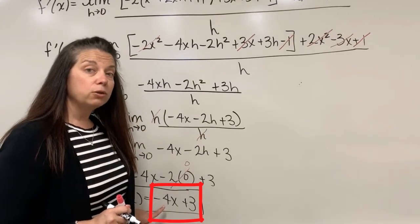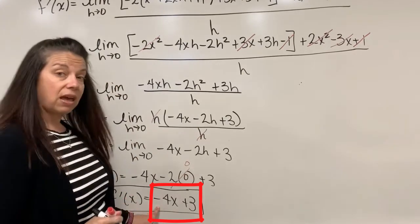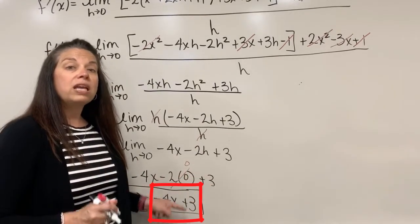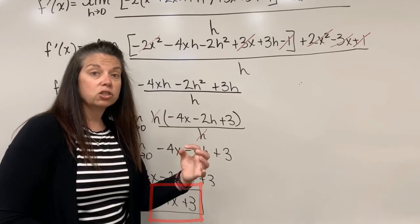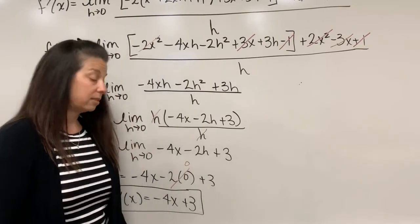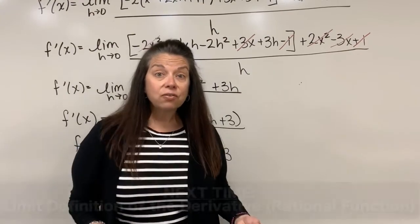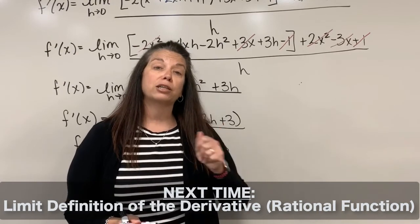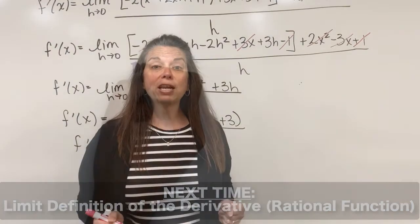I'll box this result. Notice we started with a quadratic function and used the limit definition of the derivative to find f prime of x. This derivative is a linear function — taking a quadratic and finding its derivative reveals a linear function. I hope you enjoyed this video; in the next one we'll do another example using a rational function. Please click on the Advantage logo to subscribe.